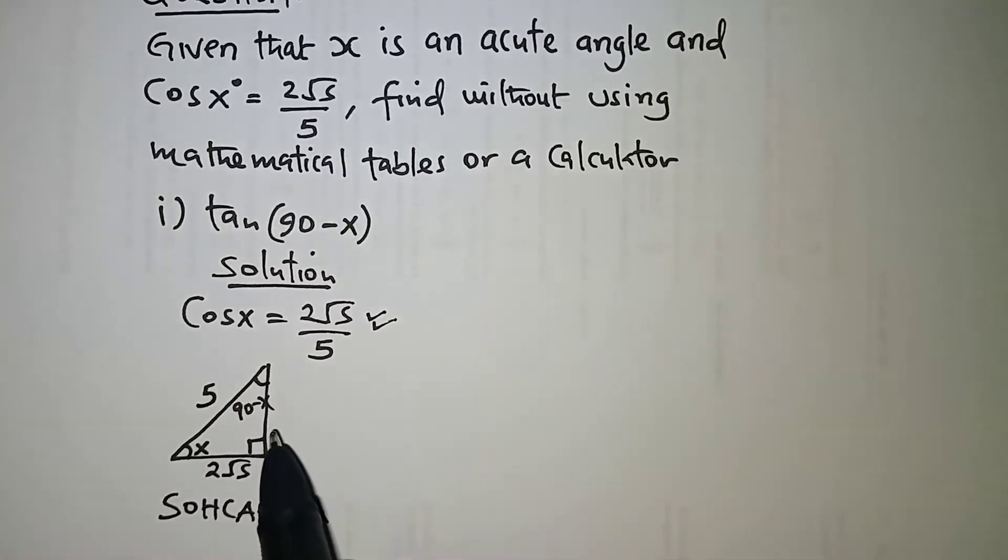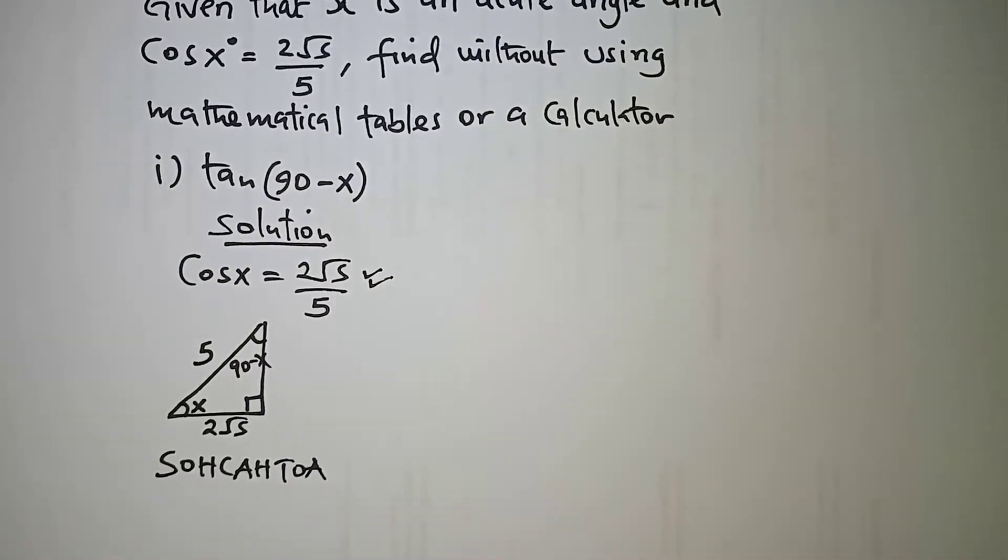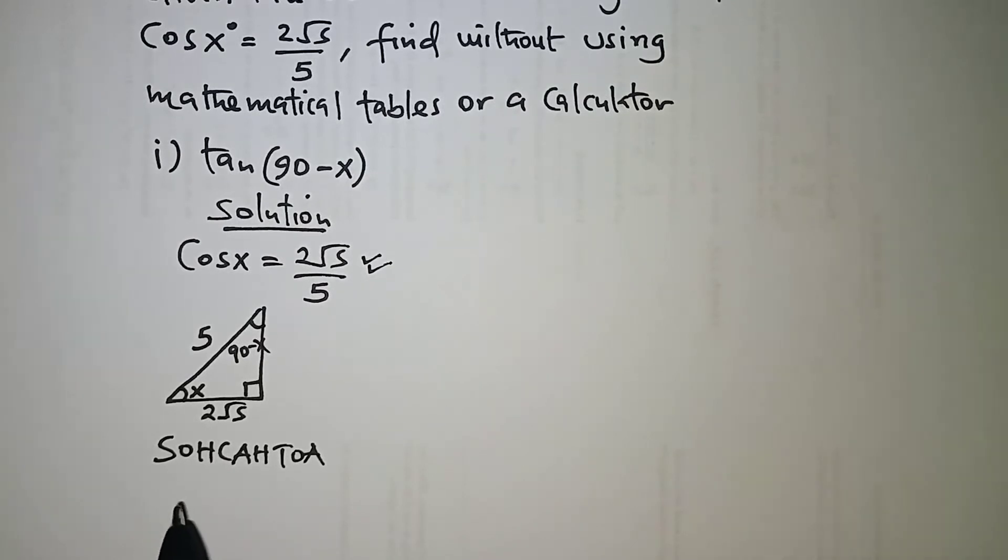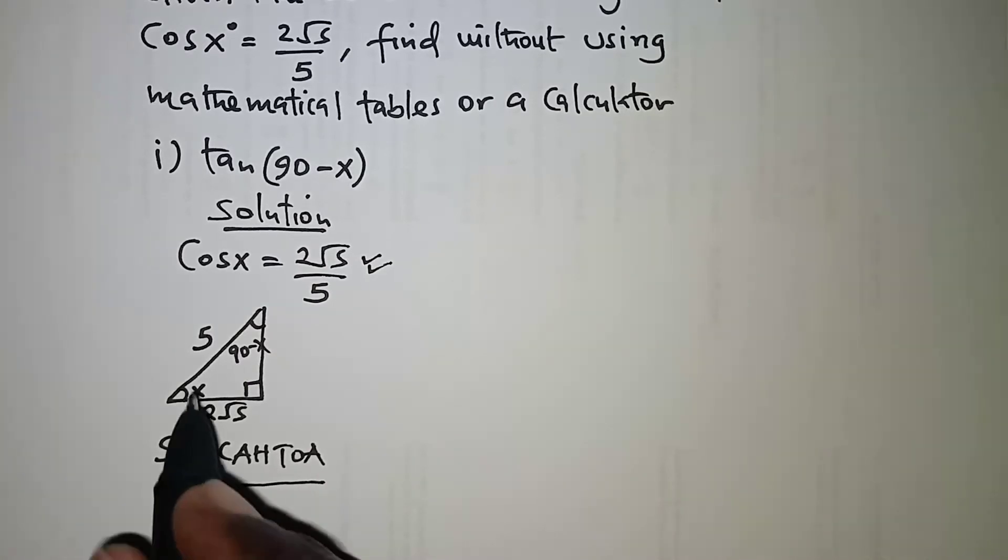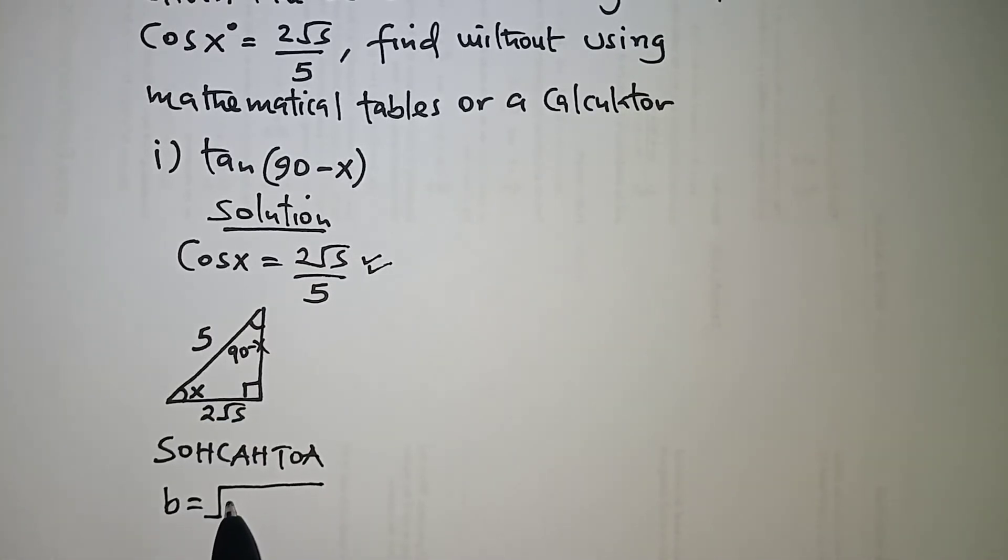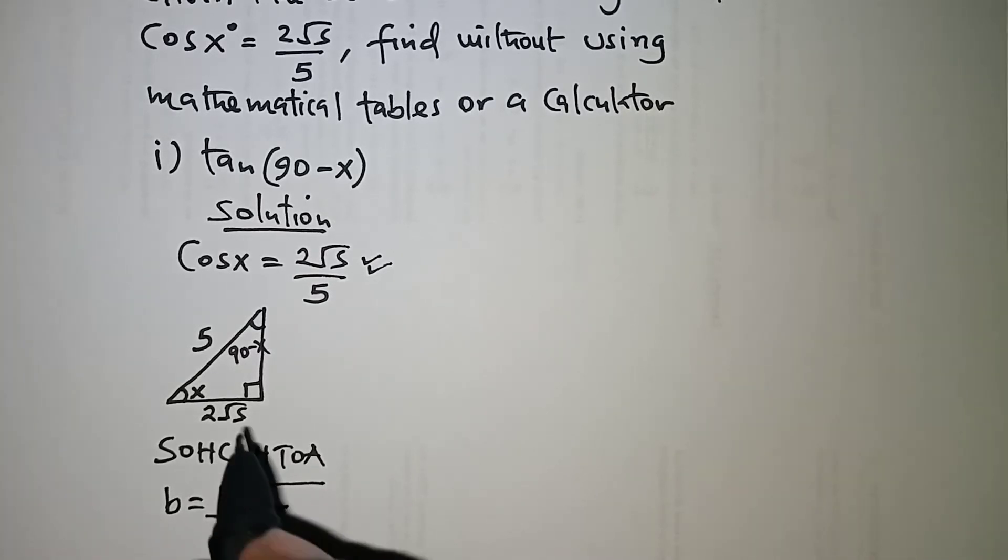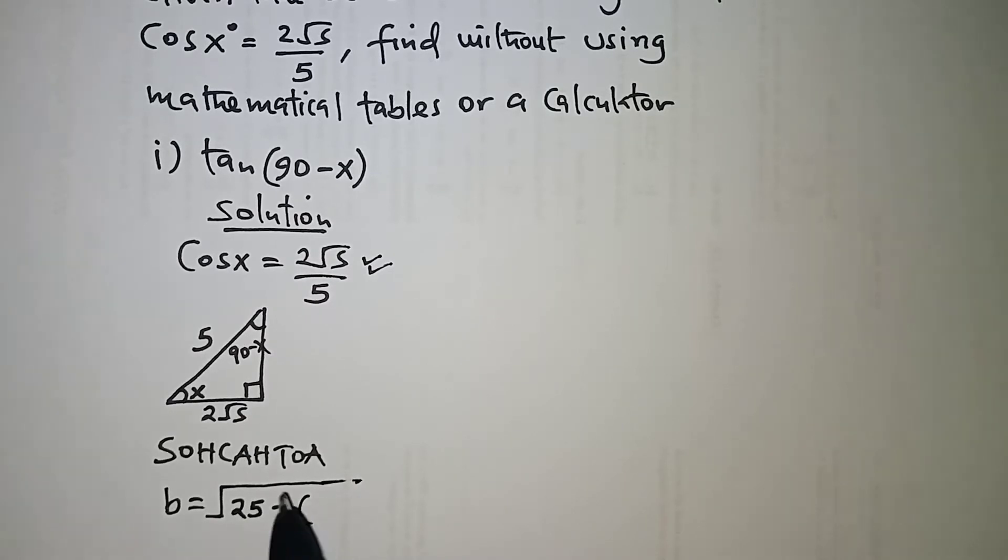So from there, because it's a right angle triangle, we can also get the missing side which is the height. So with that we will use the Pythagoras theorem so that that missing side, let's call it b, would be given as the square root of the hypotenuse squared which is 5 squared and that is 25 minus the base squared which for this case will be 2 root 5 squared.